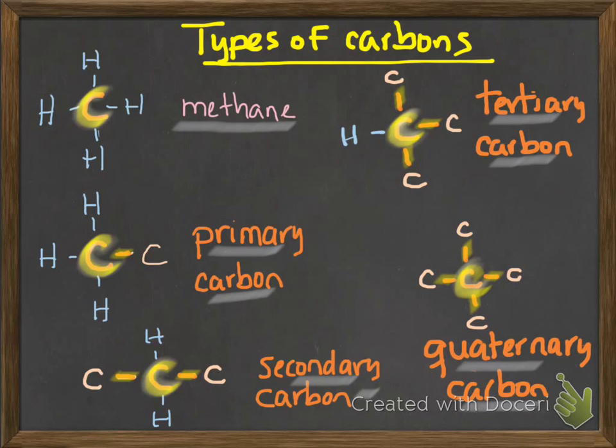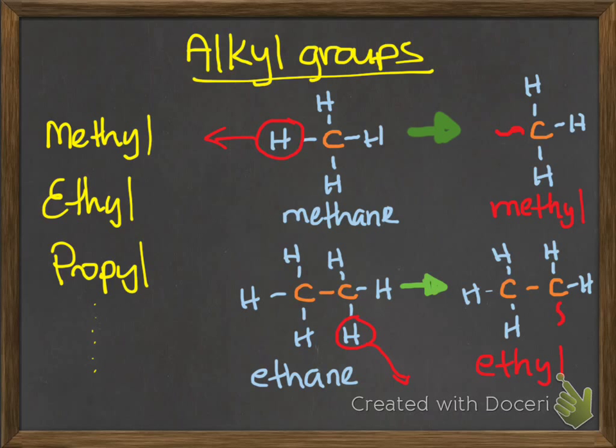Then we went to alkyl groups. Alkyl groups are hydrocarbons that have lost one hydrogen to become branches, and we have methyl, ethyl, propyl and so on.